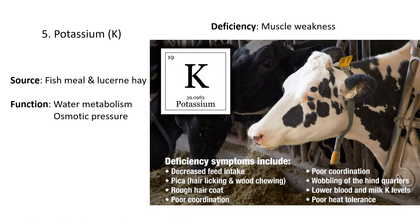Fifthly, potassium — the symbol is K. Sources of potassium include fish meal and lucerne hay. The function of potassium is it helps with water metabolism, meaning metabolism in the body where water is required, and also osmotic pressure inside the cells of the animal's body.